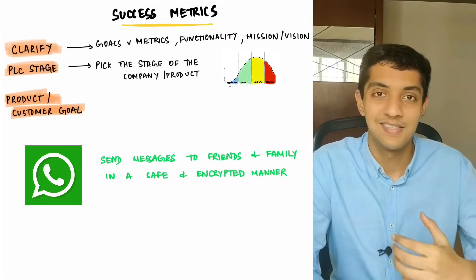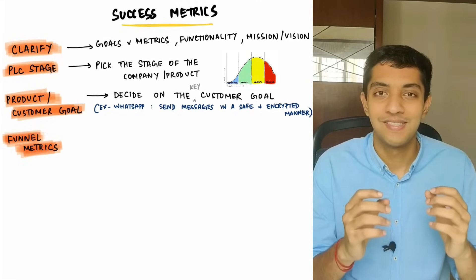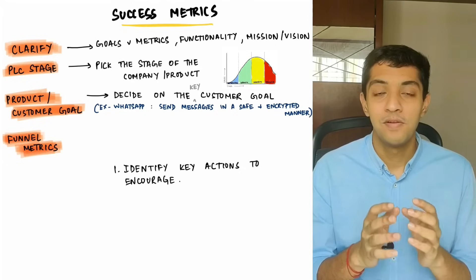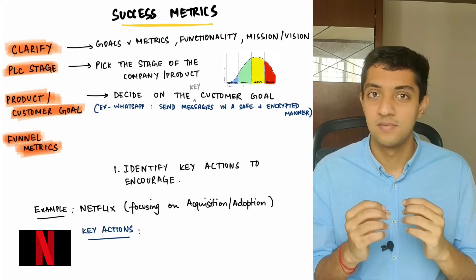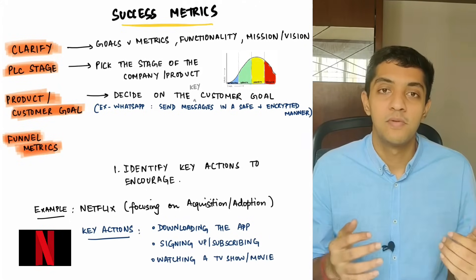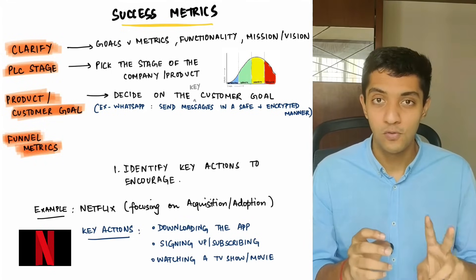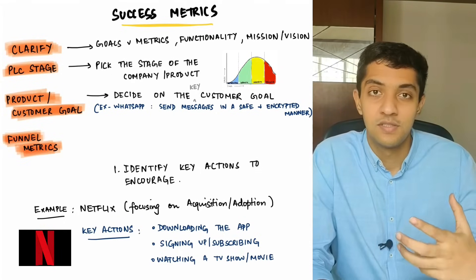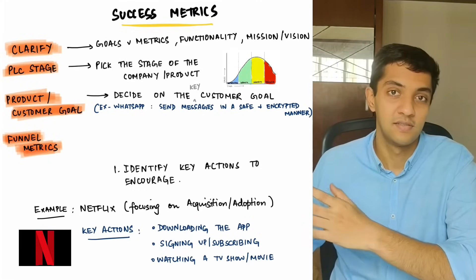Once you're done with clarifications and goal setting, go through each phase in the funnel and list down metrics for each phase. Understand the key actions users will perform on your product and which ones you want to encourage or discourage. For example, if you're Netflix optimizing for acquisition, key actions to encourage include more people downloading the app, signing up to the subscription plan, and starting or completing their first TV show or movie. Depending on your goal from step two, you can focus on the relevant funnel phases — for example, if the goal is acquisition, focus on adoption, acquisition, and conversion rather than revenue or monetization.